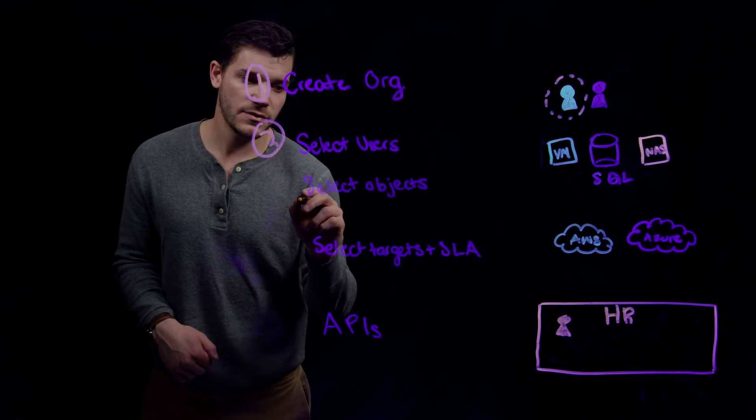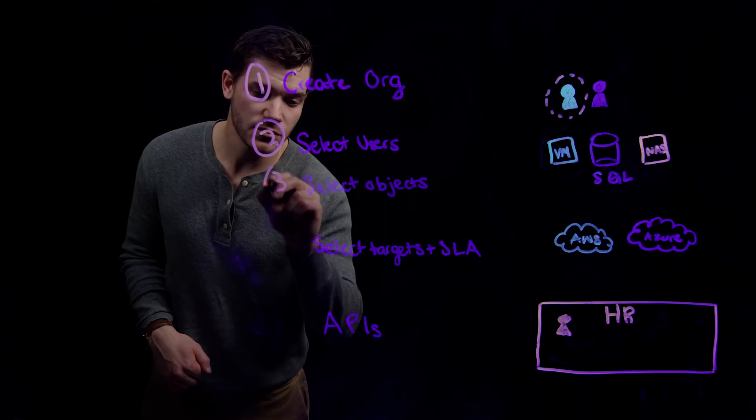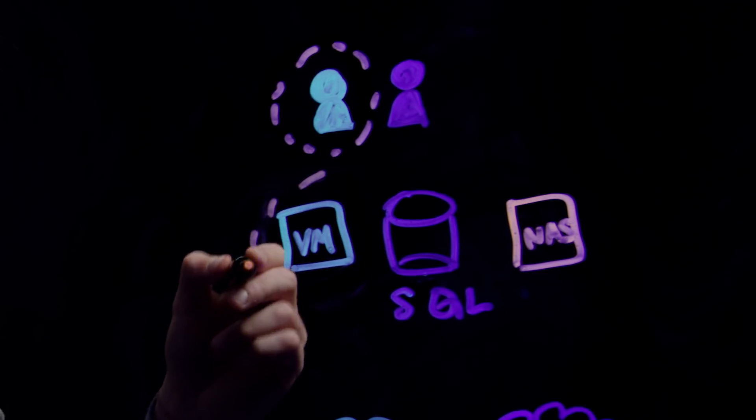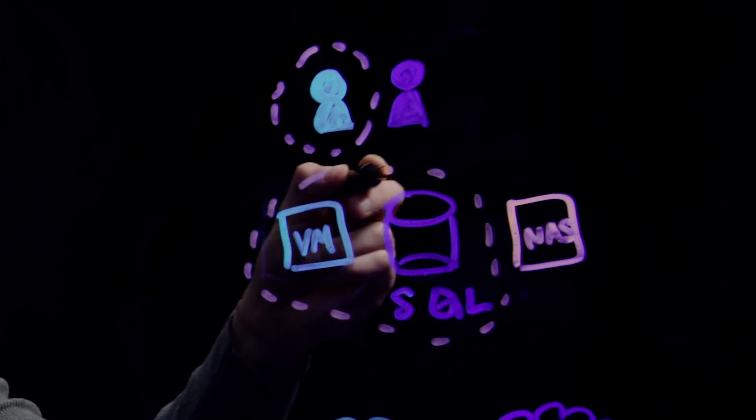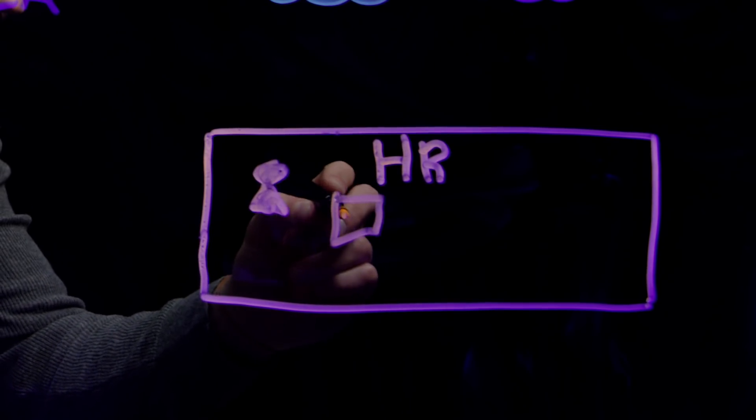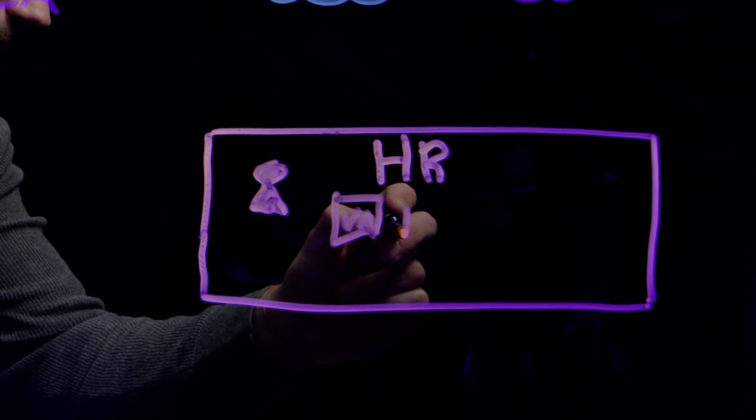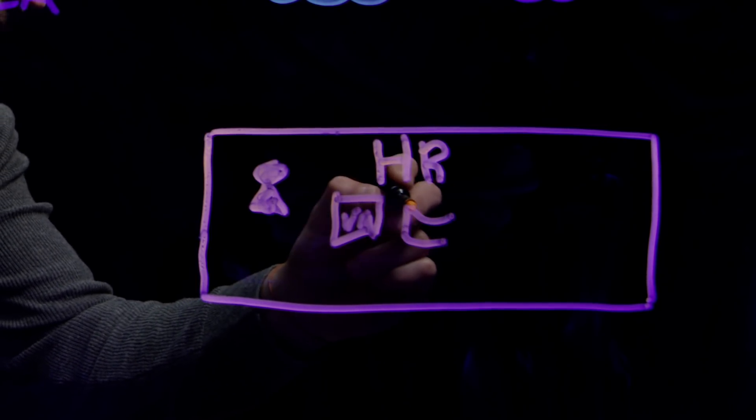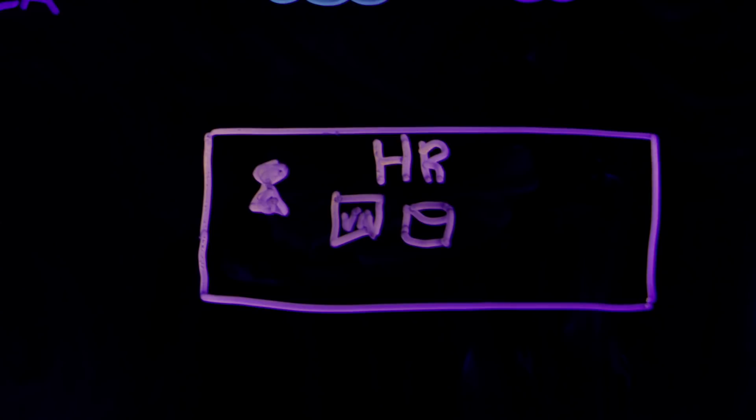That leads us to the third step where we select the actual resources that should be a part of this organization. You can select any of the various kinds of resources within the Rubrik environment, such as VMs or SQL Server databases or any of the others.